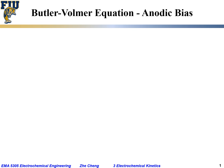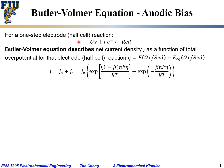Let's look at the Butler-Volmer equation for the case of anodic bias or anodic polarization. For a one-step half-cell electrode reaction — OX plus an electron to form the reduced species — the net current j is a function of overpotential η, defined as actual potential minus equilibrium potential. The current density has two parts: anodic (first term, positive) and cathodic (second term, negative).